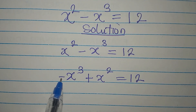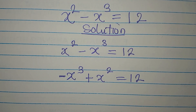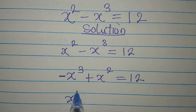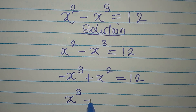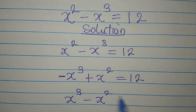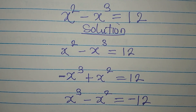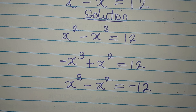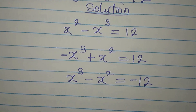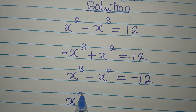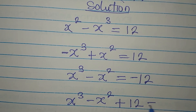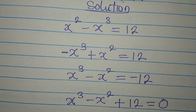We don't want to start with this negative coefficient, so we should multiply everything by negative 1. That will give x to the power of 3 minus x to the power of 2 equals negative 12. The negative 1 will multiply all the terms. Now, bring this to the left, so we have x to the power of 3 minus x to the power of 2 plus 12 equal to 0.